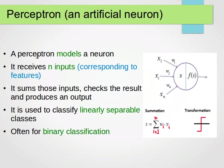So the perceptron, which is an artificial neuron, it models a neuron. It receives N inputs, maybe corresponding to features or input variables from our data, it sums those inputs, so it just adds them to each other.